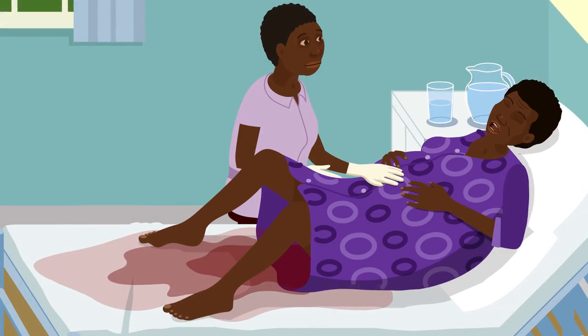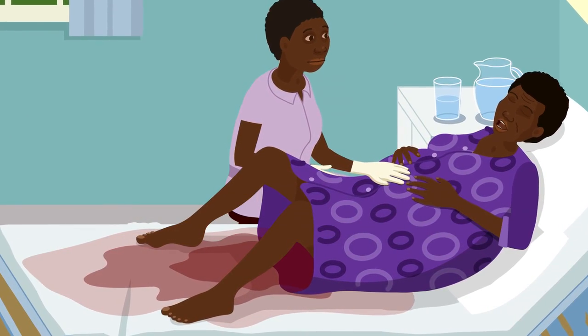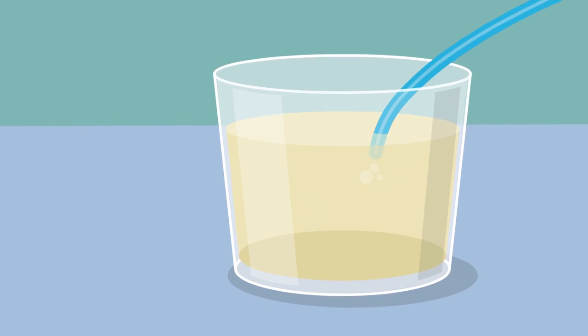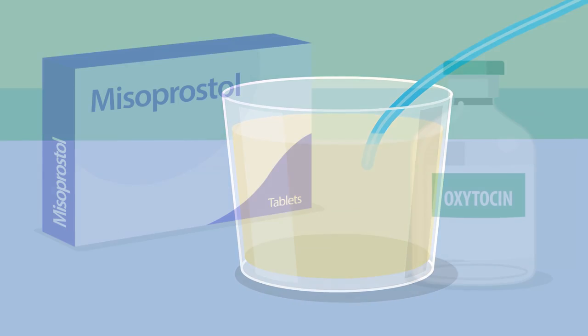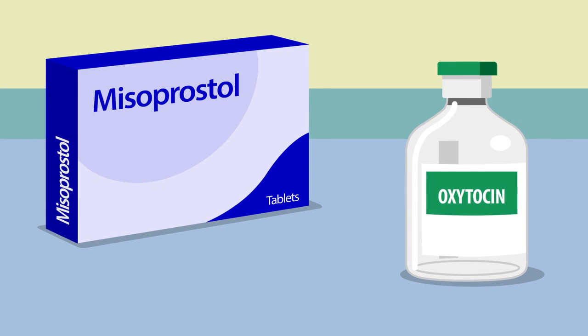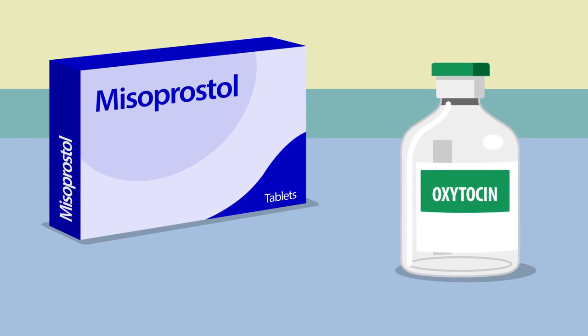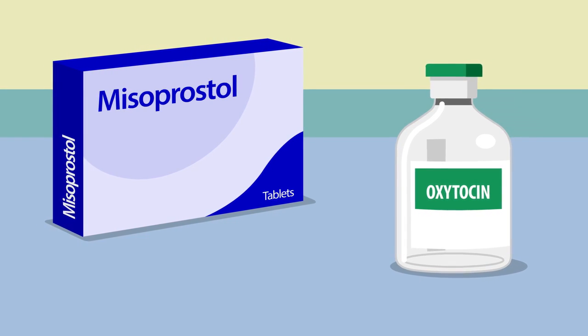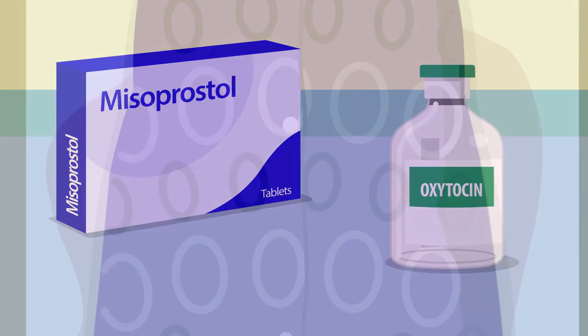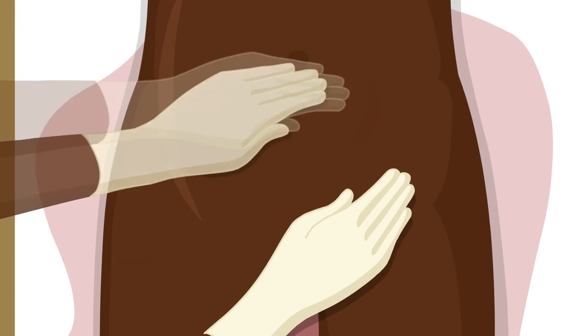But Mary is still bleeding heavily. So Grace empties the bladder and gives a strong dose of misoprostol or oxytocin to help contract the uterus. Grace also continues to massage the uterus.